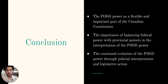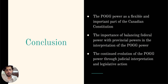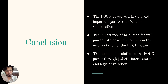While the federal parliament has enacted legislation under the emergency branch to address various emergencies, the POG power remains an essential part of the Canadian Constitution, providing a means for the federal government to address matters of national concern requiring an urgent response. As the country and its challenges continue to evolve, the POG power will likely continue to evolve through judicial interpretation and legislative actions. It is important to maintain a balance between federal and provincial powers in the interpretation and use of POG to ensure that Canada remains a strong and unified nation.